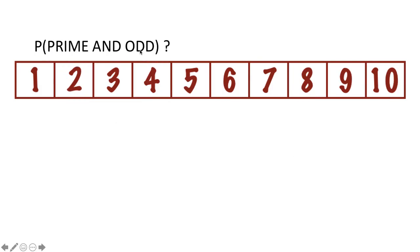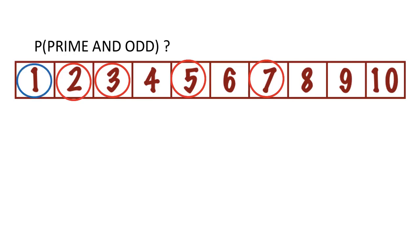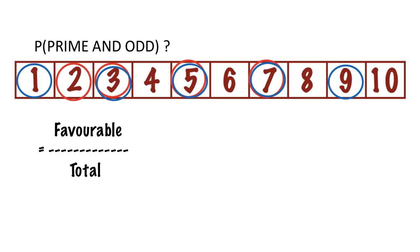Let's do another one: probability of prime and odd. You've got to know your prime numbers up to ten — two, three, five, and seven. You go through and circle your prime numbers: two, three, five, and seven. Then separately identify the odd numbers: one, three, five, seven, and nine. The ones that make you win are only those circled both times. One is odd but not prime. Two is prime but not odd. The numbers that are both prime and odd are three, five, and seven. So favorable outcomes is three out of ten.